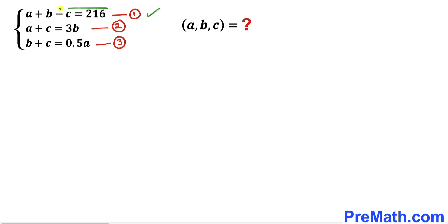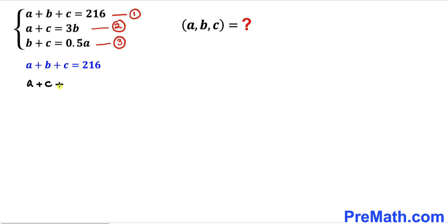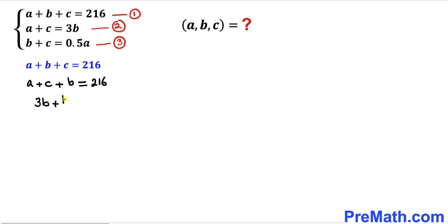Let's focus on equation one. I have copied down equation one here, and now I am going to rearrange — putting a and c together. So I can write a plus c plus b equals 216. Now from equation two, a plus c equals three times b, so I am going to replace a plus c with three times b.